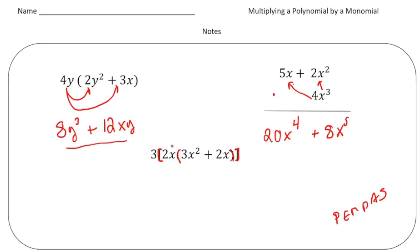So we're going to multiply each part of that binomial by 2x. So 2x times 3x squared, and then 2x times 2x. So that's going to give us 6x cubed plus 4x squared. And that's still in a bracket.